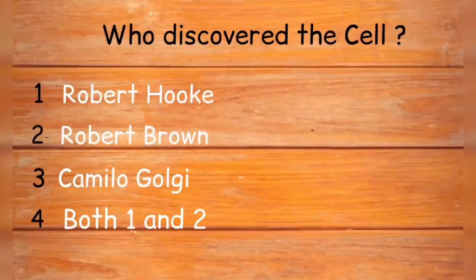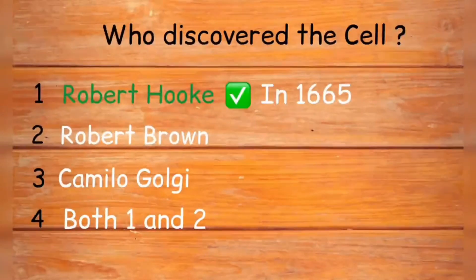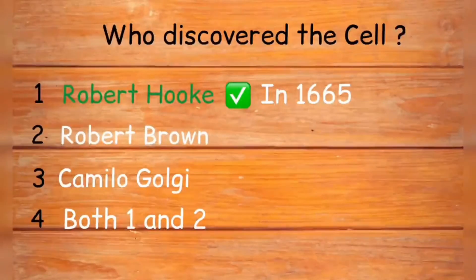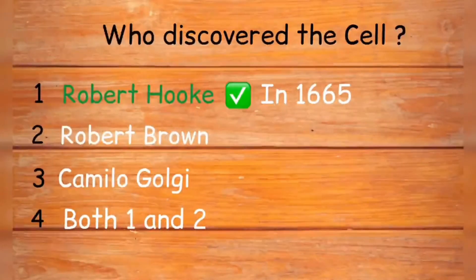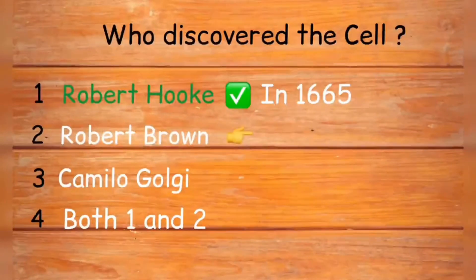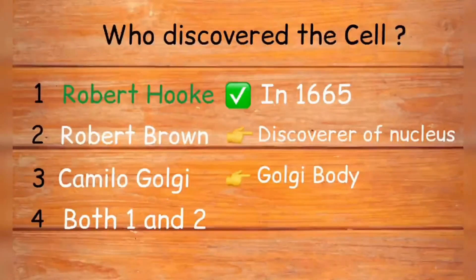The next question is: who discovered the cell? Options are Robert Hooke, Robert Brown, Camilo Golgi, and both option one and two. Cell was discovered by Robert Hooke in the year 1665. He observed slices of cork under a simple microscope and noticed honeycomb-like structures separated from each other by walls. These honeycomb-like structures were the cells. Robert Hooke not only discovered the cell but also coined the term 'cell'. Robert Brown was the discoverer of the nucleus, while Camilo Golgi was the discoverer of the Golgi body.